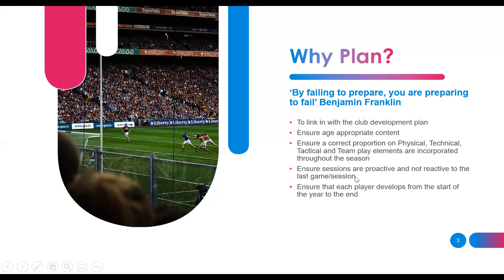Planning ensures that each player develops from the start of the year to the end. Where do we want the child at the start of the year and where do we want them at the end? For example, we might want an under-12 kid, by the end of the under-12 year, to be able to kick the ball left foot and right foot from 20 yards over the bar. Things like that can be varied from age group to age group.